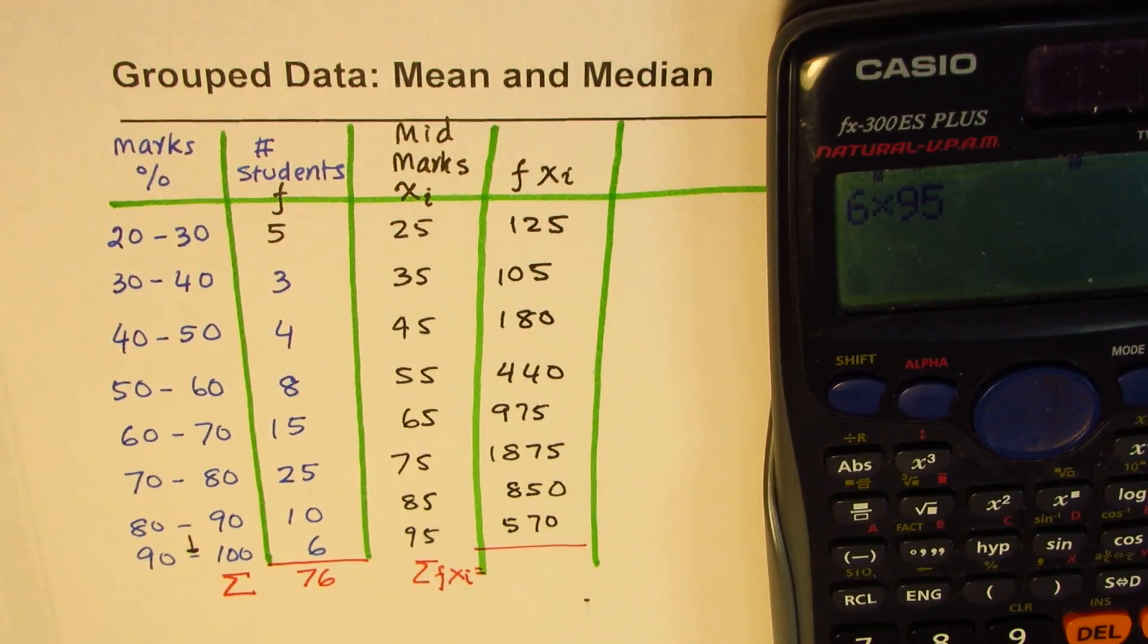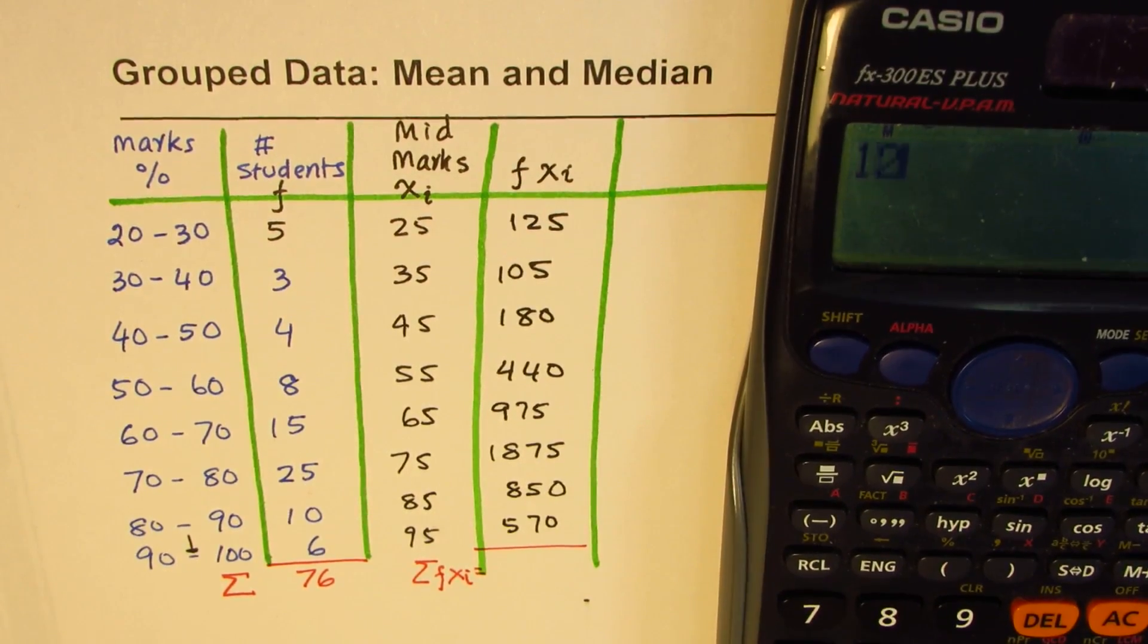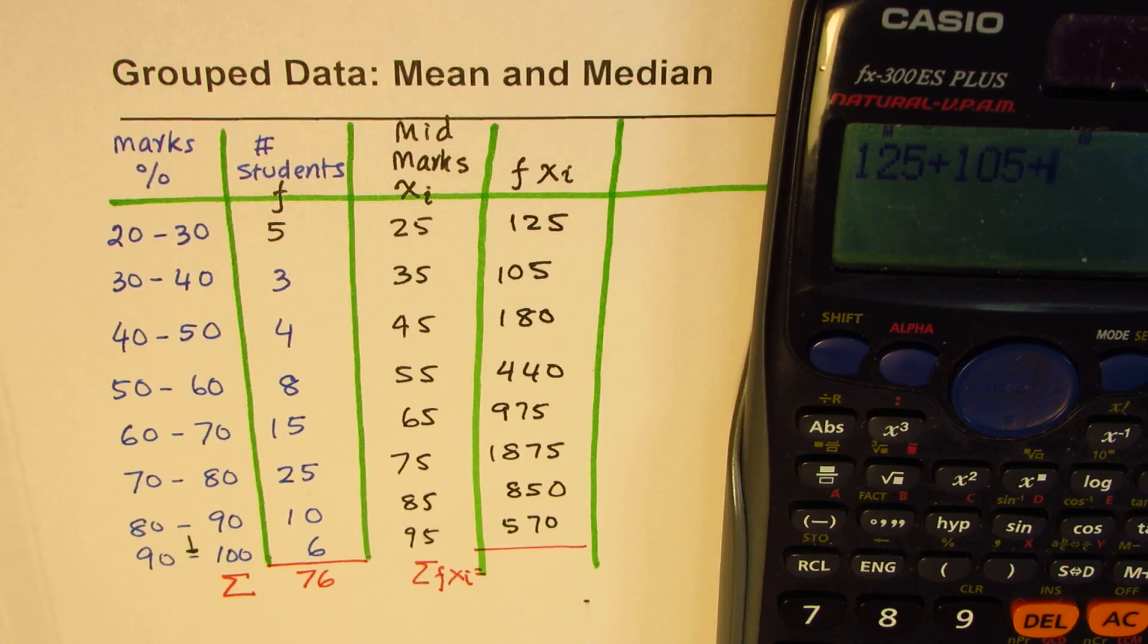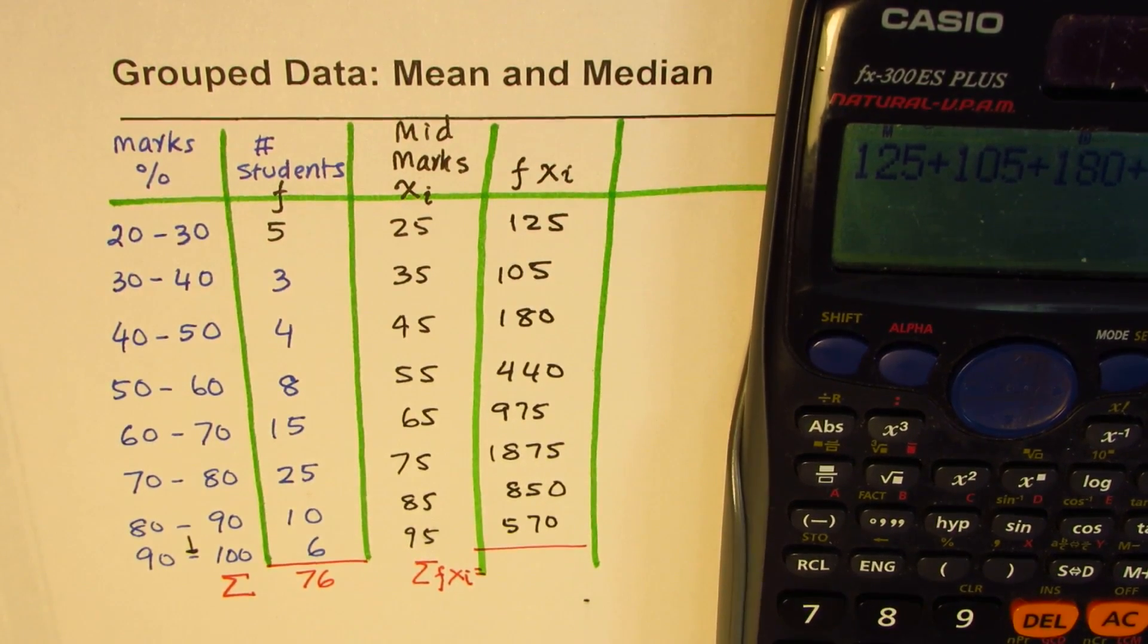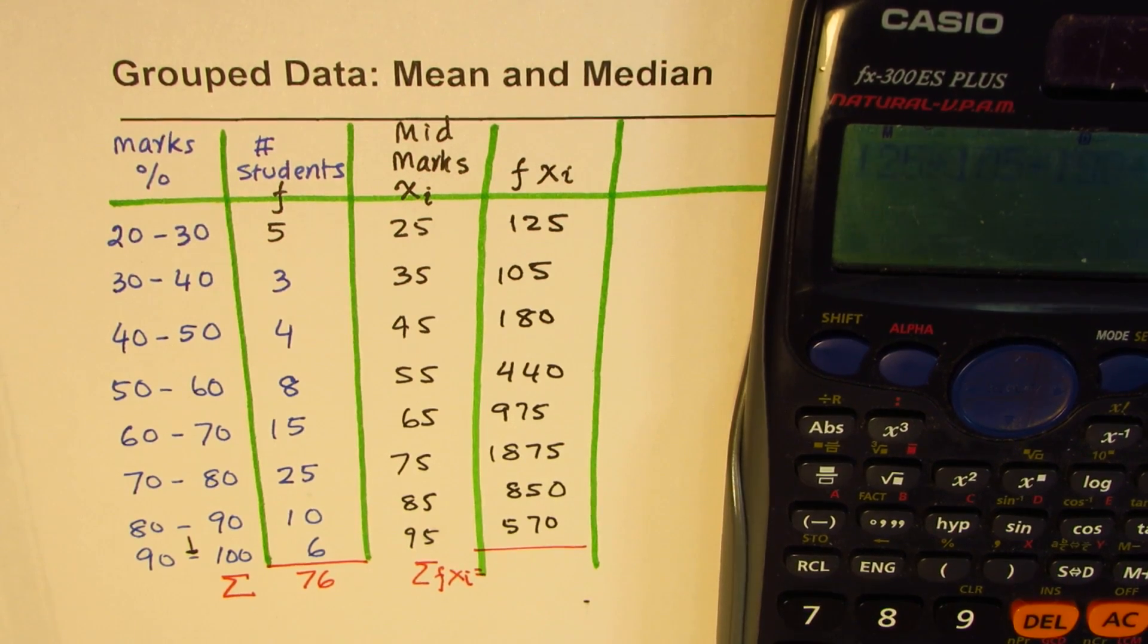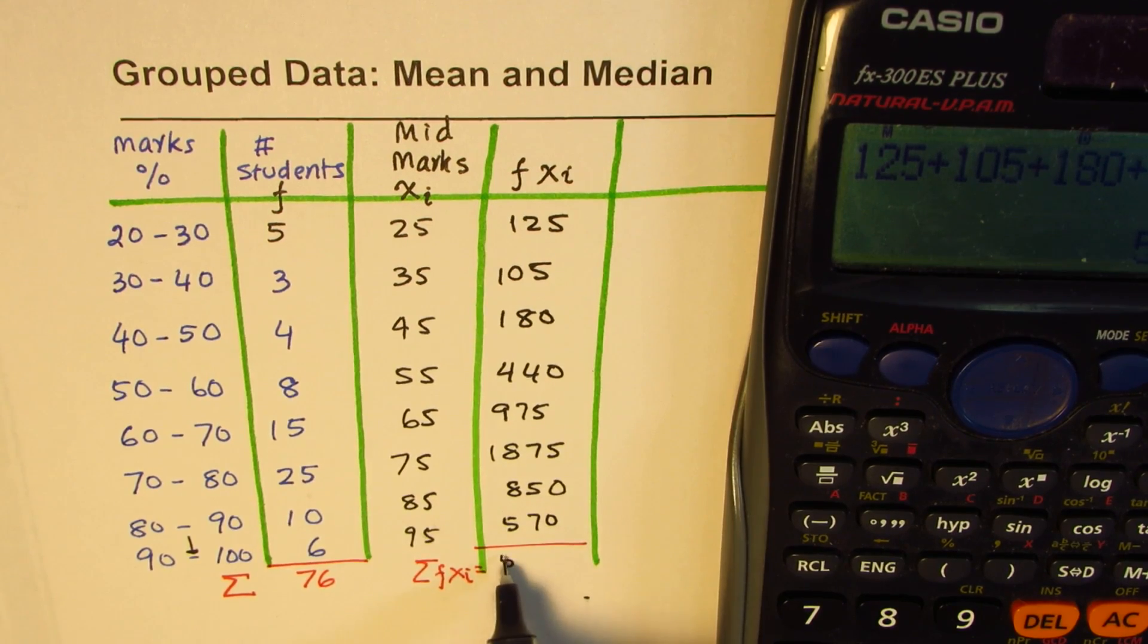6 times 95 equals 570. That becomes the total - the product of students and in that group how much did they get. Let's add this up to find the total for fxi. Add all these numbers to get the total which is 5120.